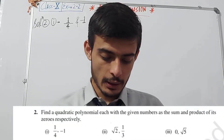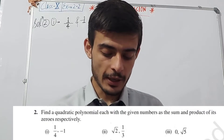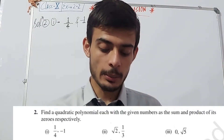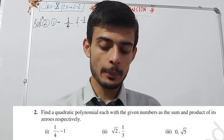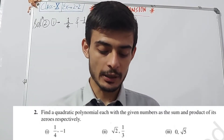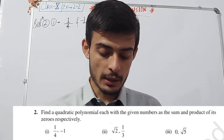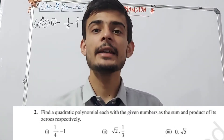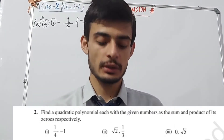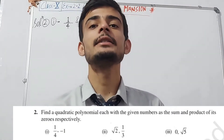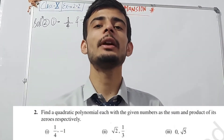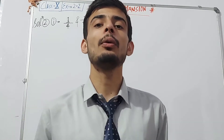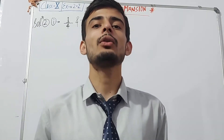As you can see, the question is saying: find a quadratic polynomial each with the given number as the sum and product of its zeros respectively. In the first part, we are given 1/4 as the sum of the roots and minus 1 as the product of the roots of the quadratic equation, and we have to form a quadratic equation out of them.